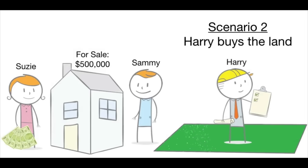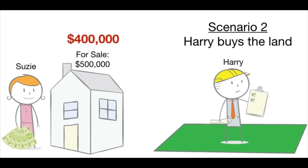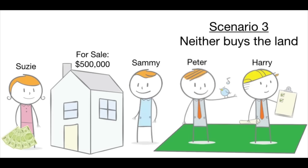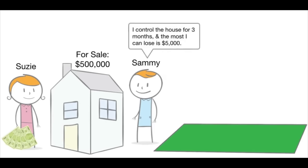In scenario two, Harry buys the nearby parcel of land, which will decrease the value of Susie's home to say $400,000. In that case, Sammy will not exercise his option to buy at $500,000 — he'll just walk away from the deal having lost only $5,000. In scenario three, neither party buys the nearby parcel of land. Susie's house is still worth $500,000 and Sammy can elect to exercise his option or simply walk away, again losing only $5,000.